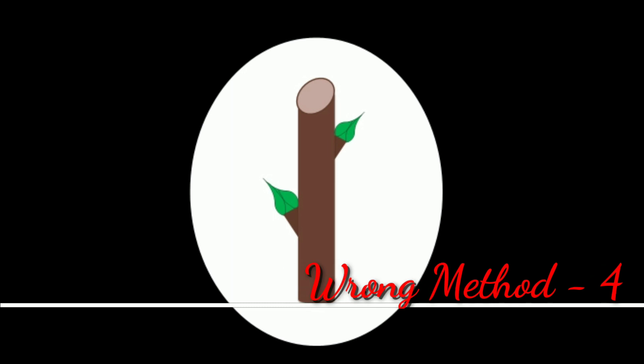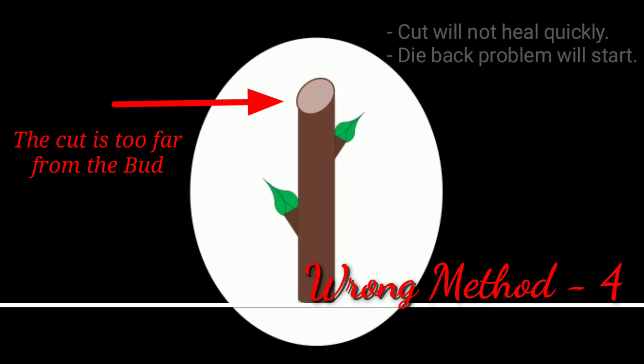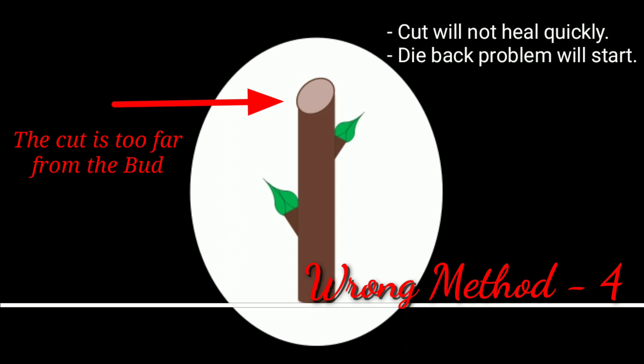Now let's see another picture of the wrong pruning example. In this picture you can see that the cut is angular and opposite to the bud direction, but it is too far away from the growing bud. Due to this, the cut will take a long time to heal, die-back problem may start, and our plant and tree branch will start drying. So we should also avoid this wrong practice of the pruning process.